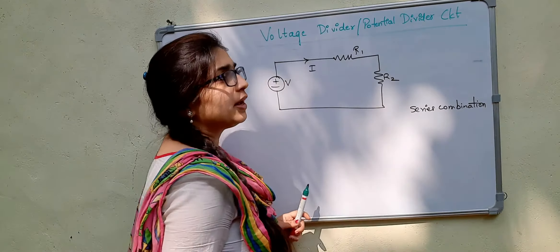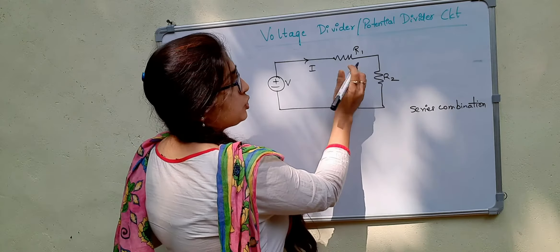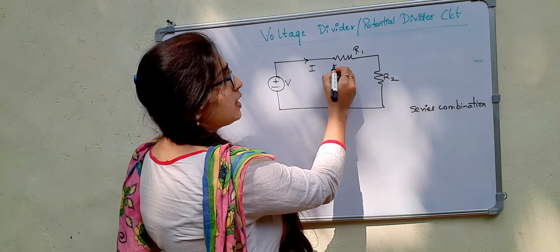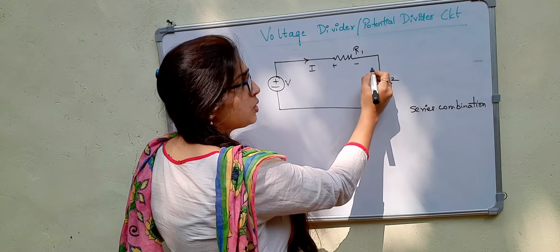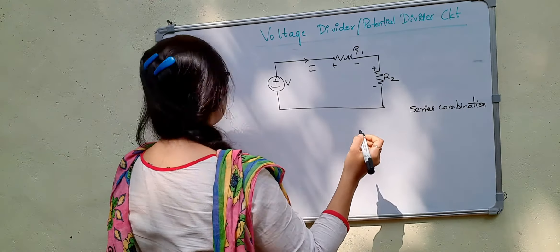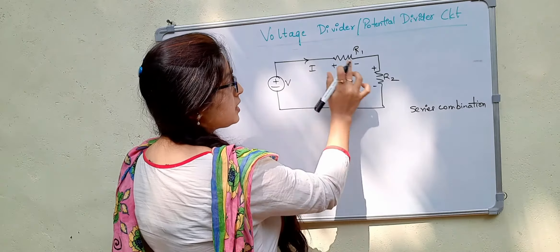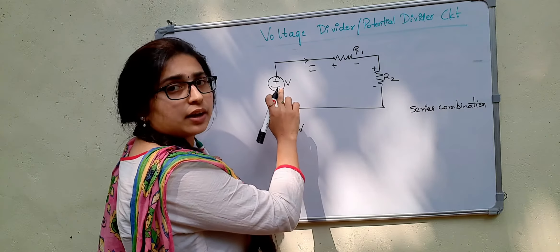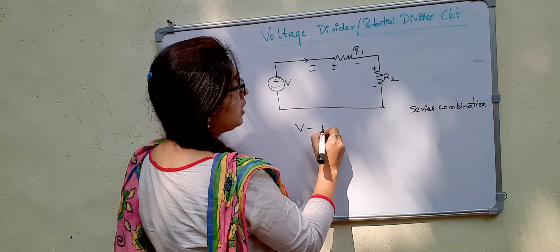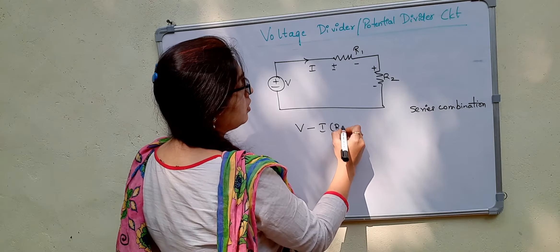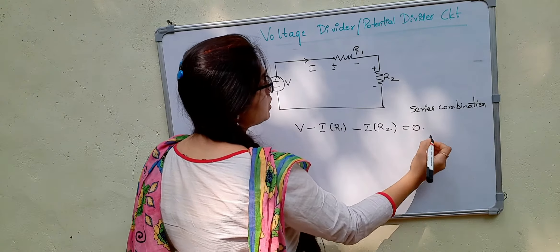Now, if I apply KVL to this circuit, we can mark the potential drops here. Since the current is flowing in this direction, this will be plus and this will be minus. And here, since it is flowing in this direction, this is plus and this is minus. Applying KVL: since we are getting minus first, it is plus V; then, since we are getting plus first, that will be minus I R1; then minus I into R2, equal to zero. This is by KVL.